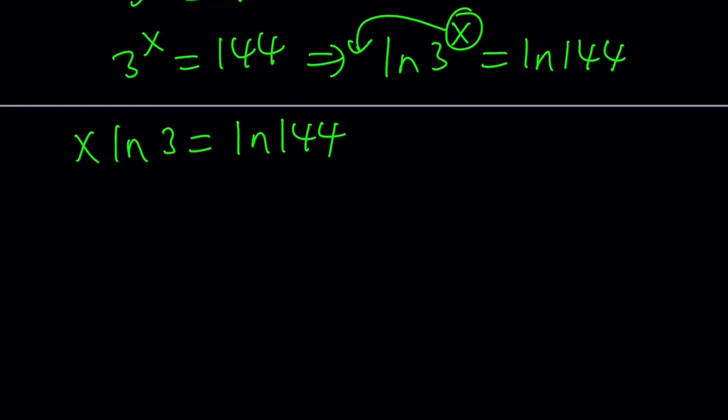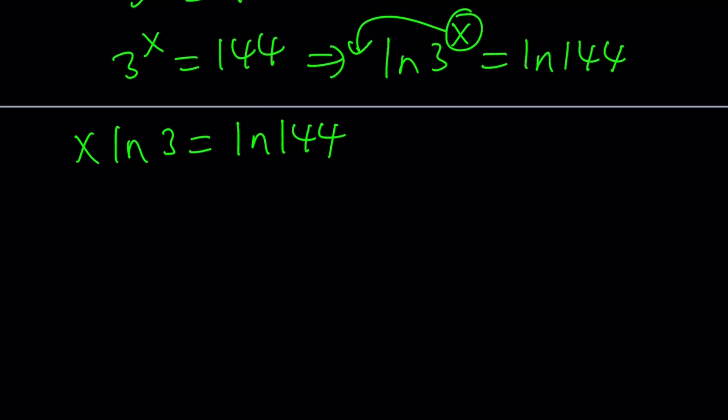Now isn't that beautiful? By logging both sides with base e, and any base is okay, we get rid of the exponent. So now we can go ahead and isolate x from here. x can be written as ln 144 over ln 3. So that's the value of x.